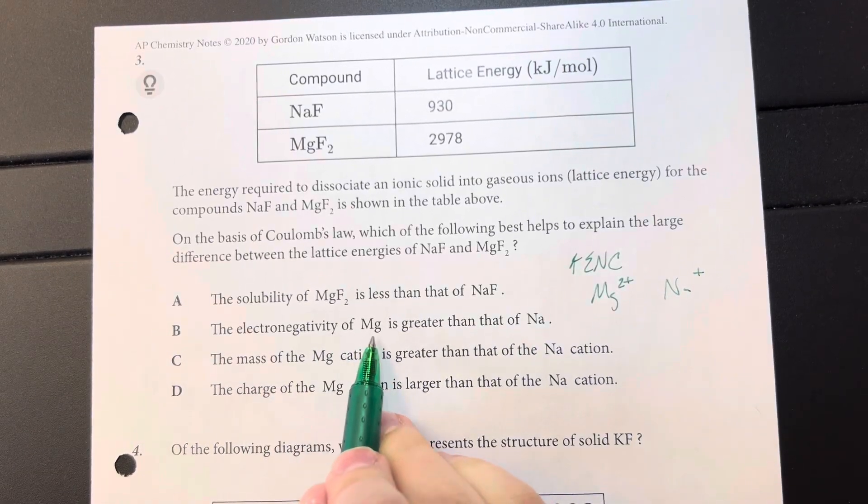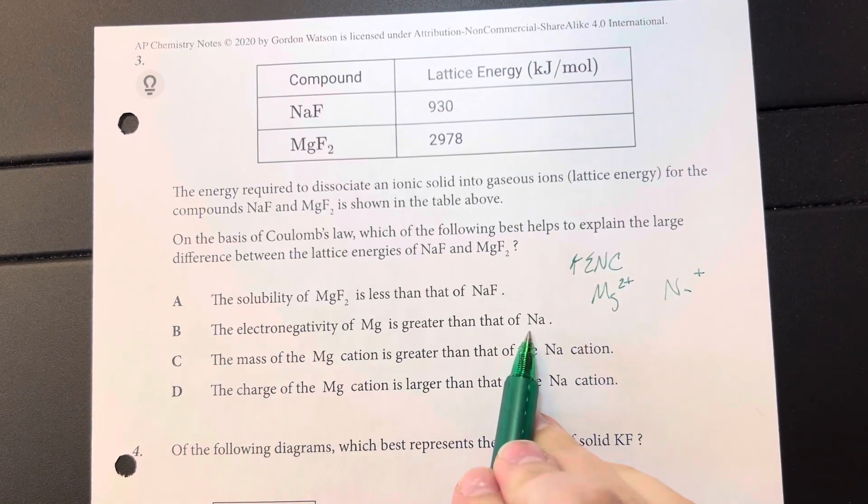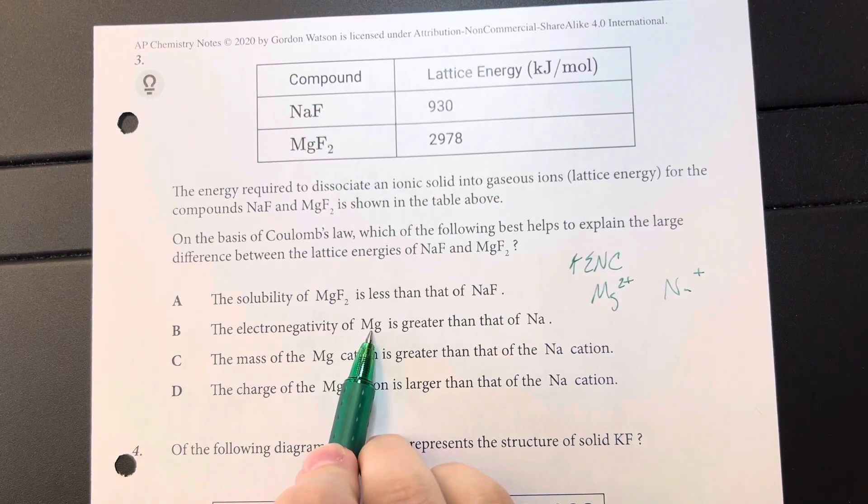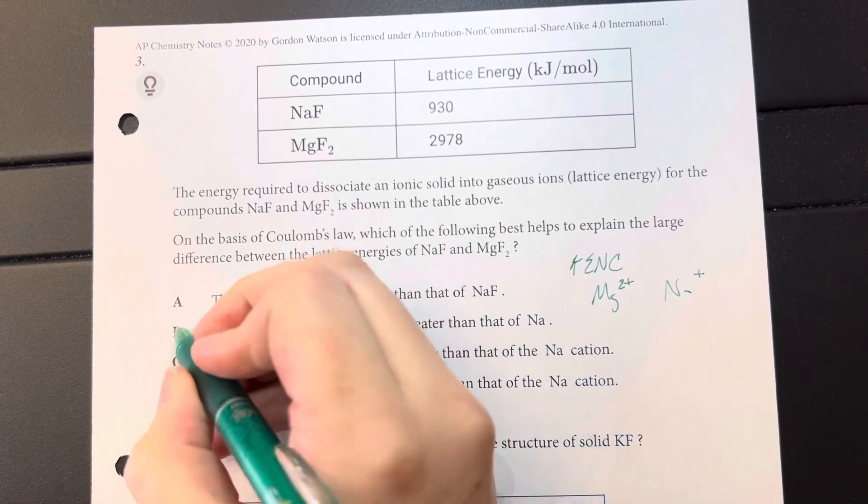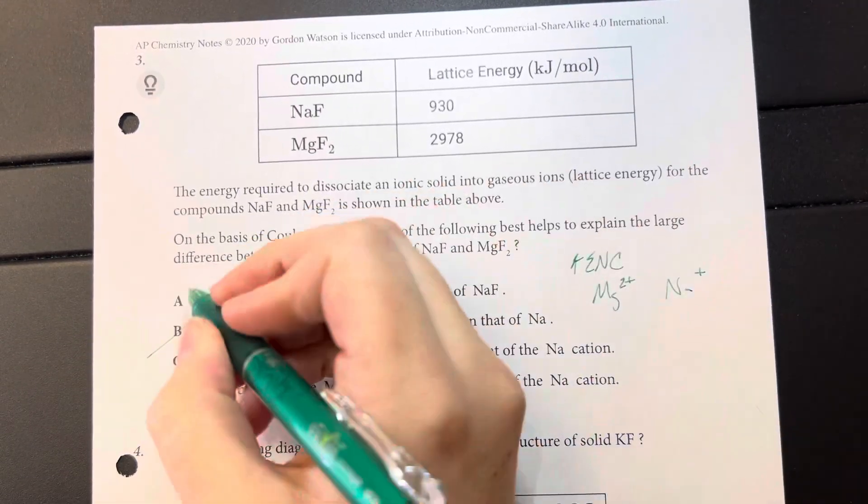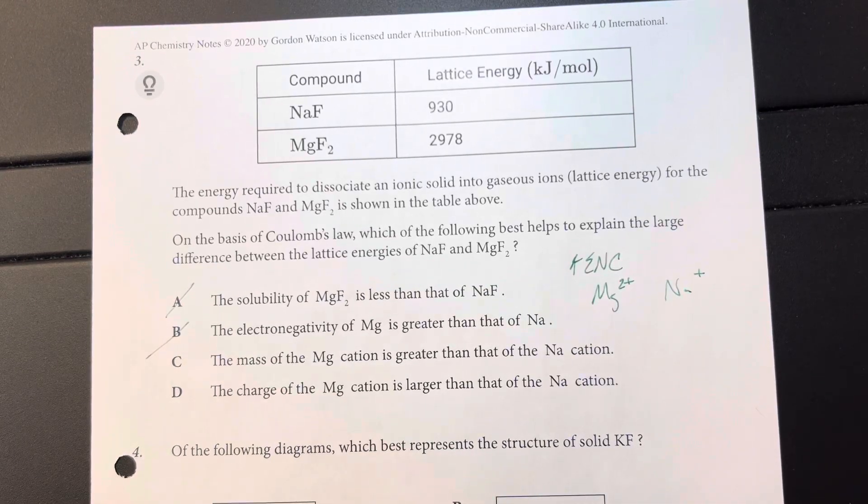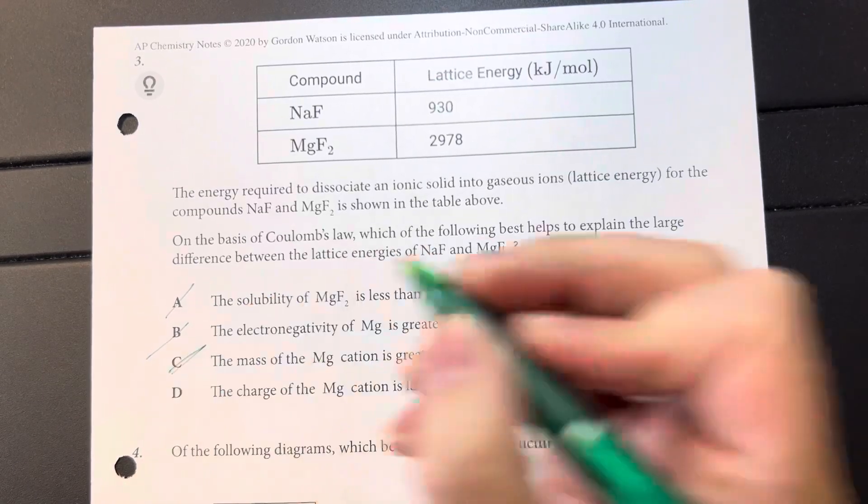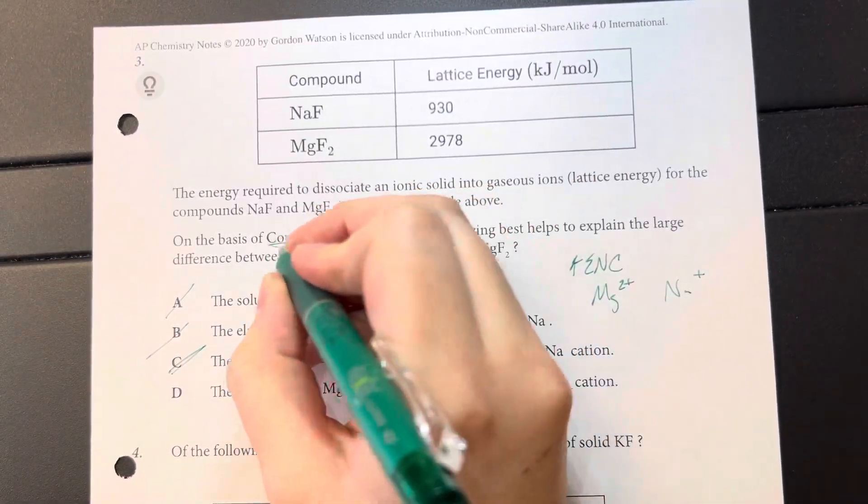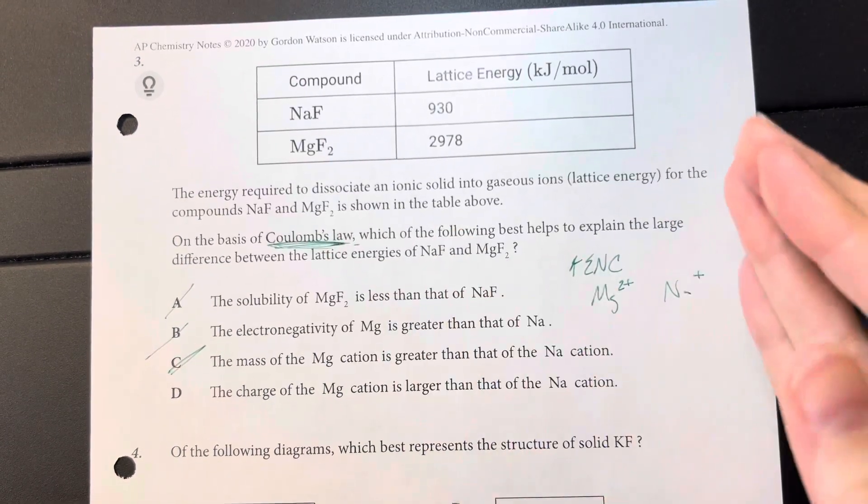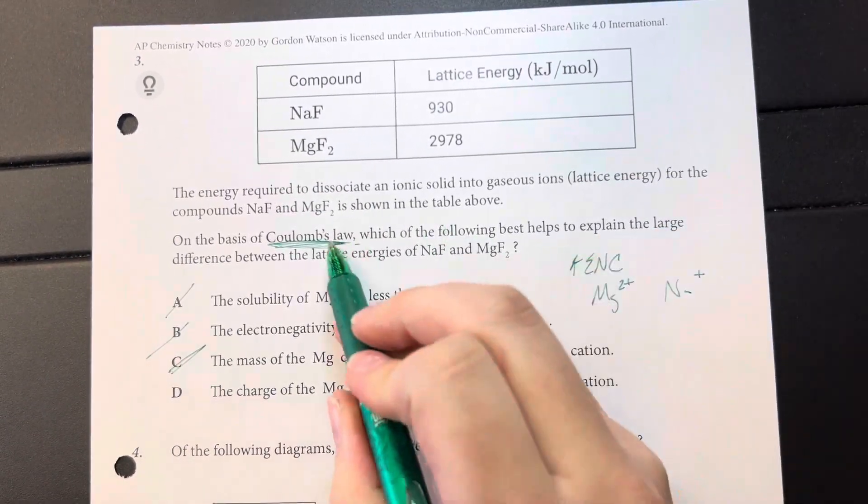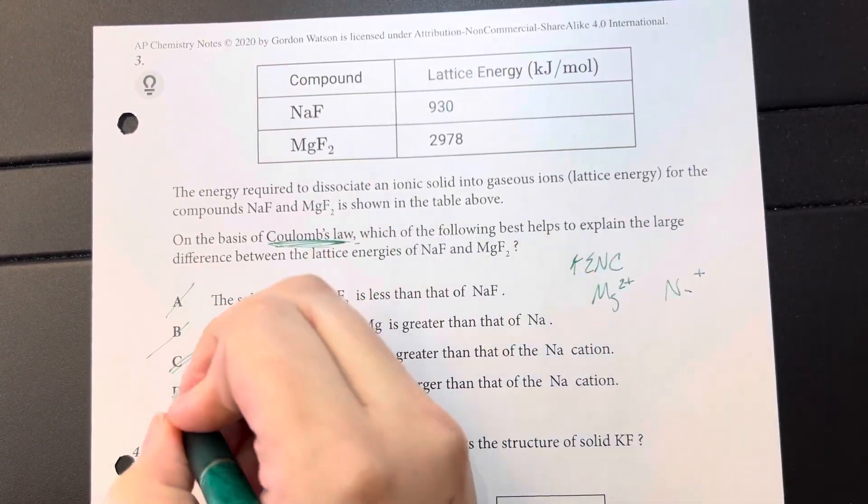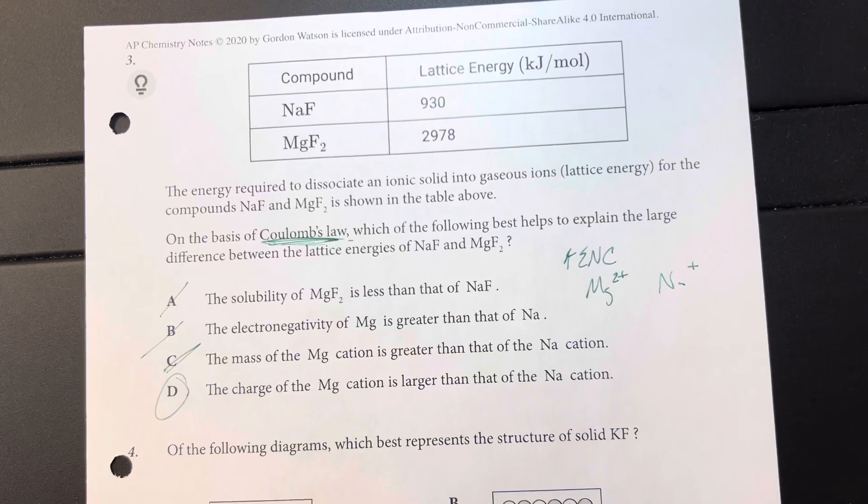The electronegativity of magnesium is greater than that of sodium. Magnesium is really not interested in holding on to other electrons, so it definitely doesn't want to do that. Solubility doesn't have anything to do with my lattice energy. The mass of the magnesium cation isn't going to change anything. The thing that I'm interested in is going to be the charge, and especially since we have that statement of based on Coulomb's Law, we are dealing with charge differentials. So the charge of magnesium cation is larger than that of sodium is going to be the answer that I'm going to choose.